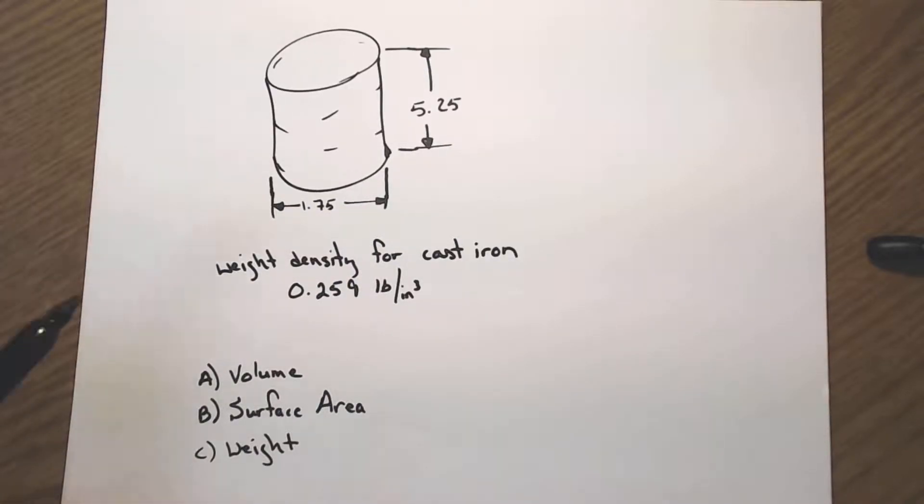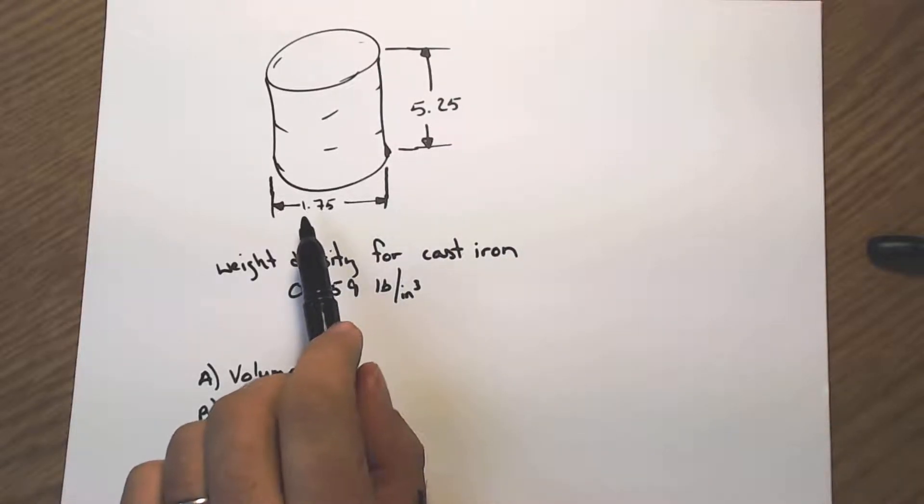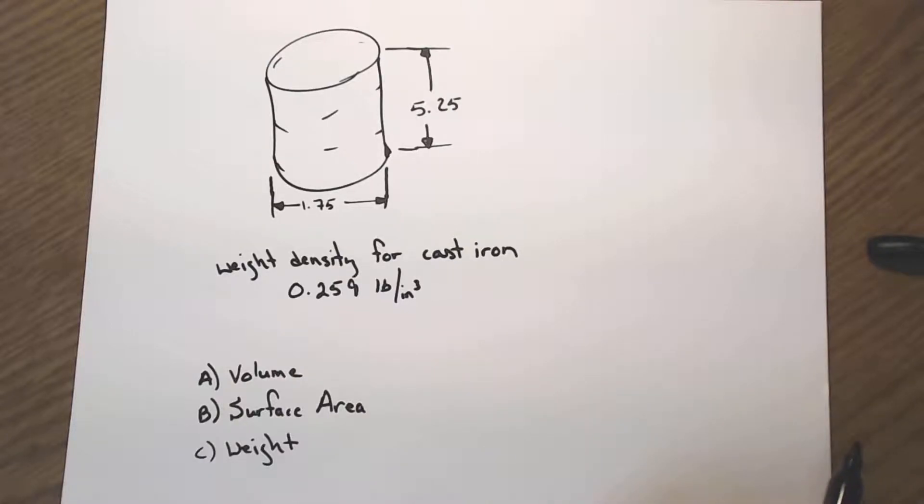The picture up here you can see is 5.25 tall, our diameter is 1.75, these are all in inches, and you had to know weight density, and that is 0.259 pounds per cubic inch. Alright, let's get started.